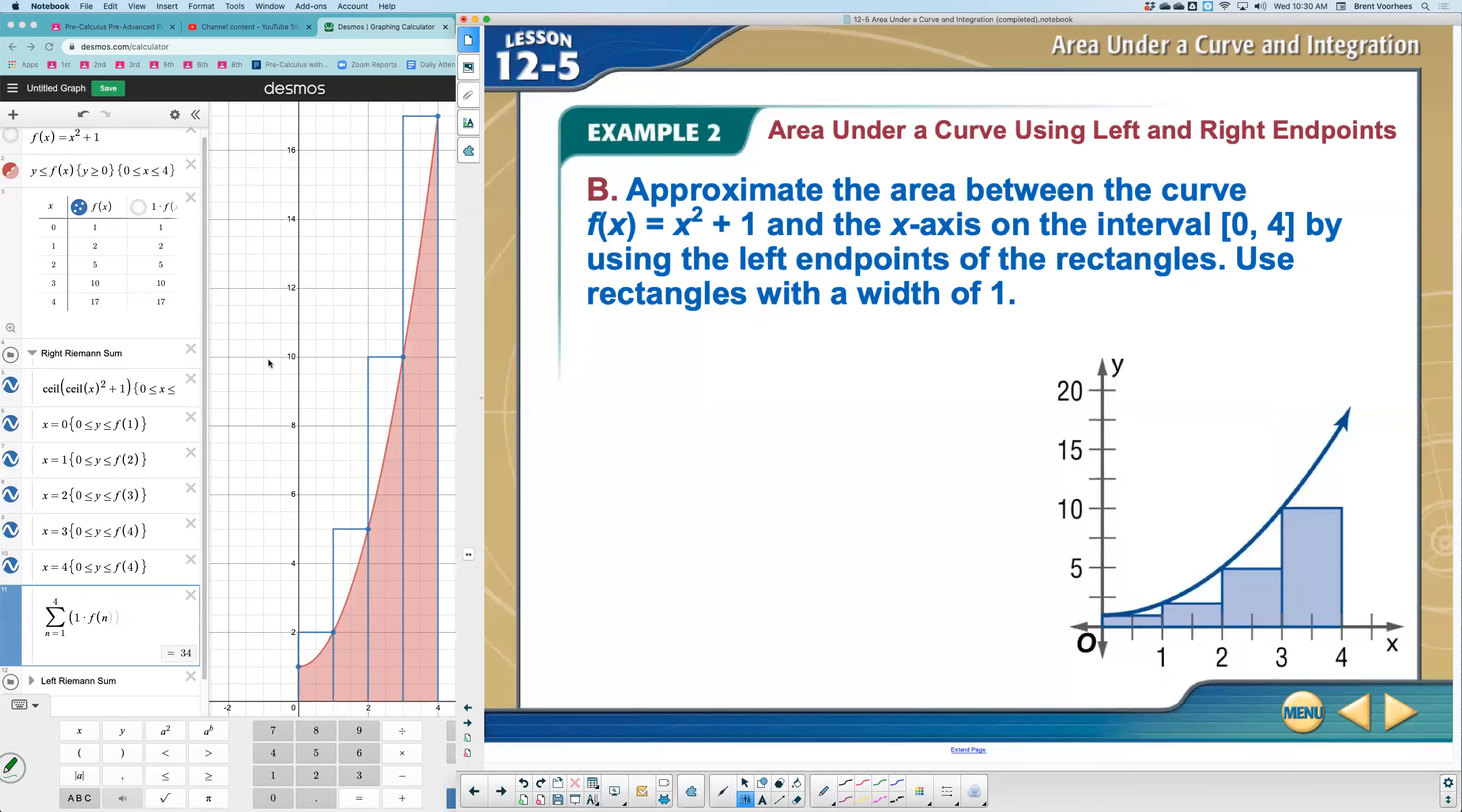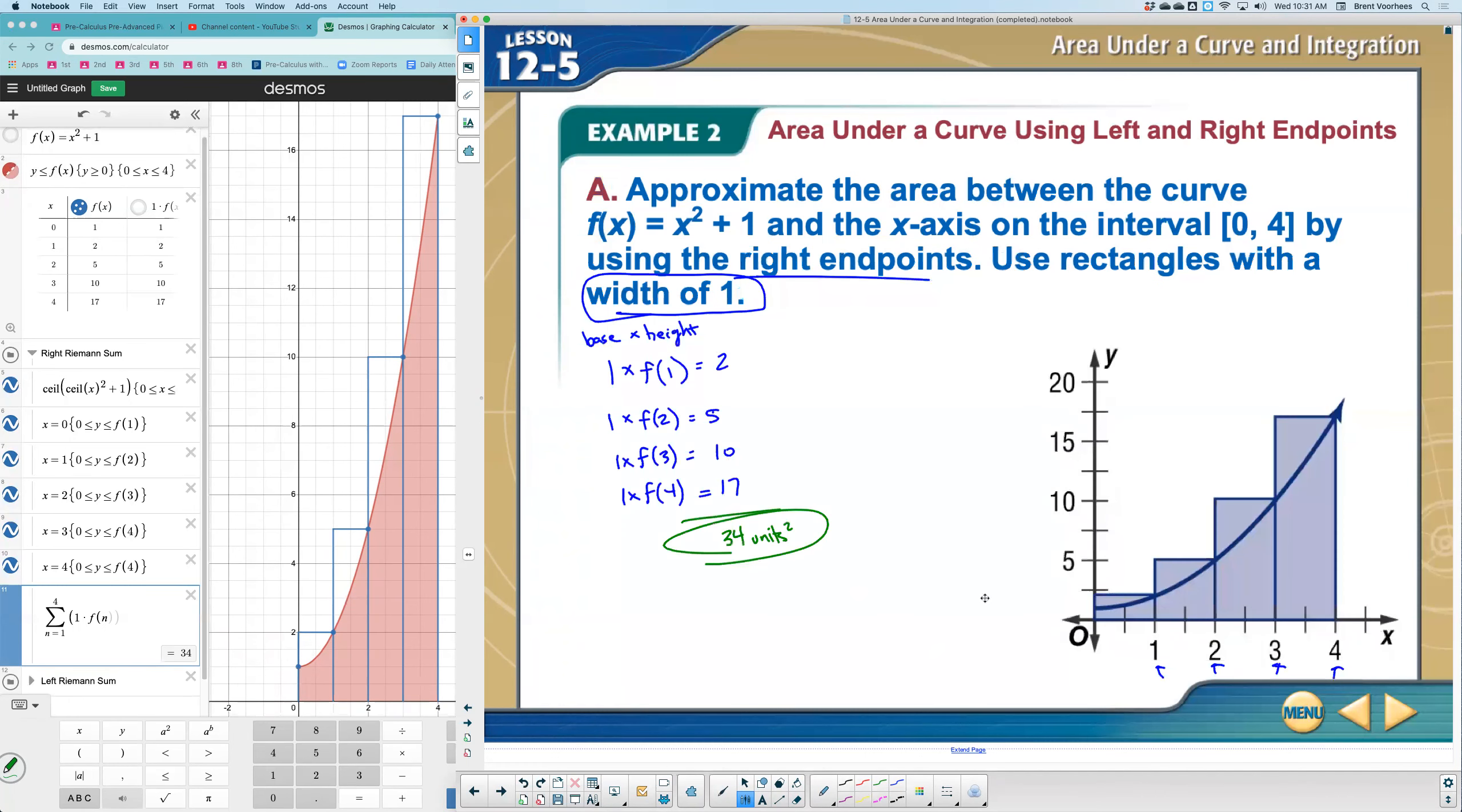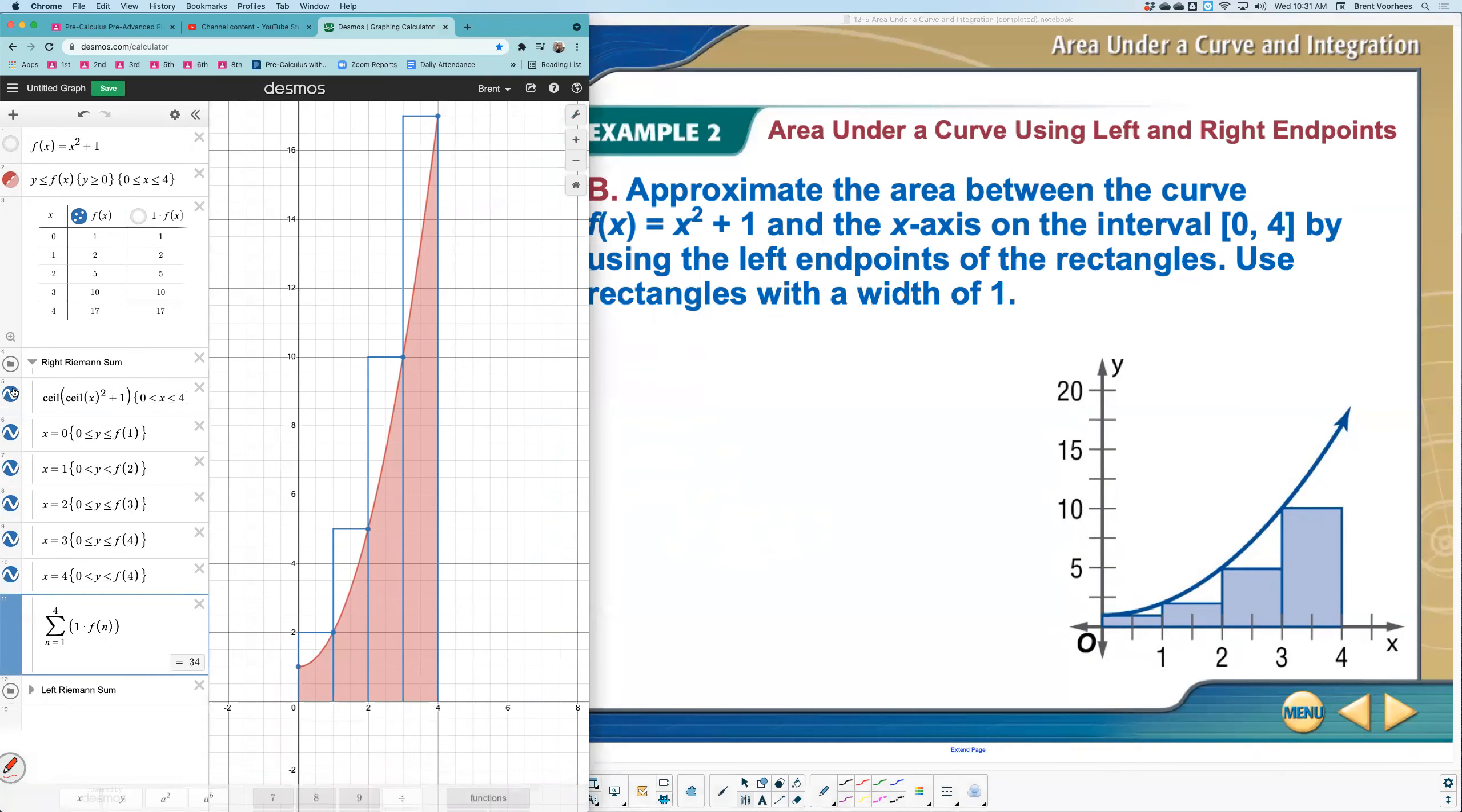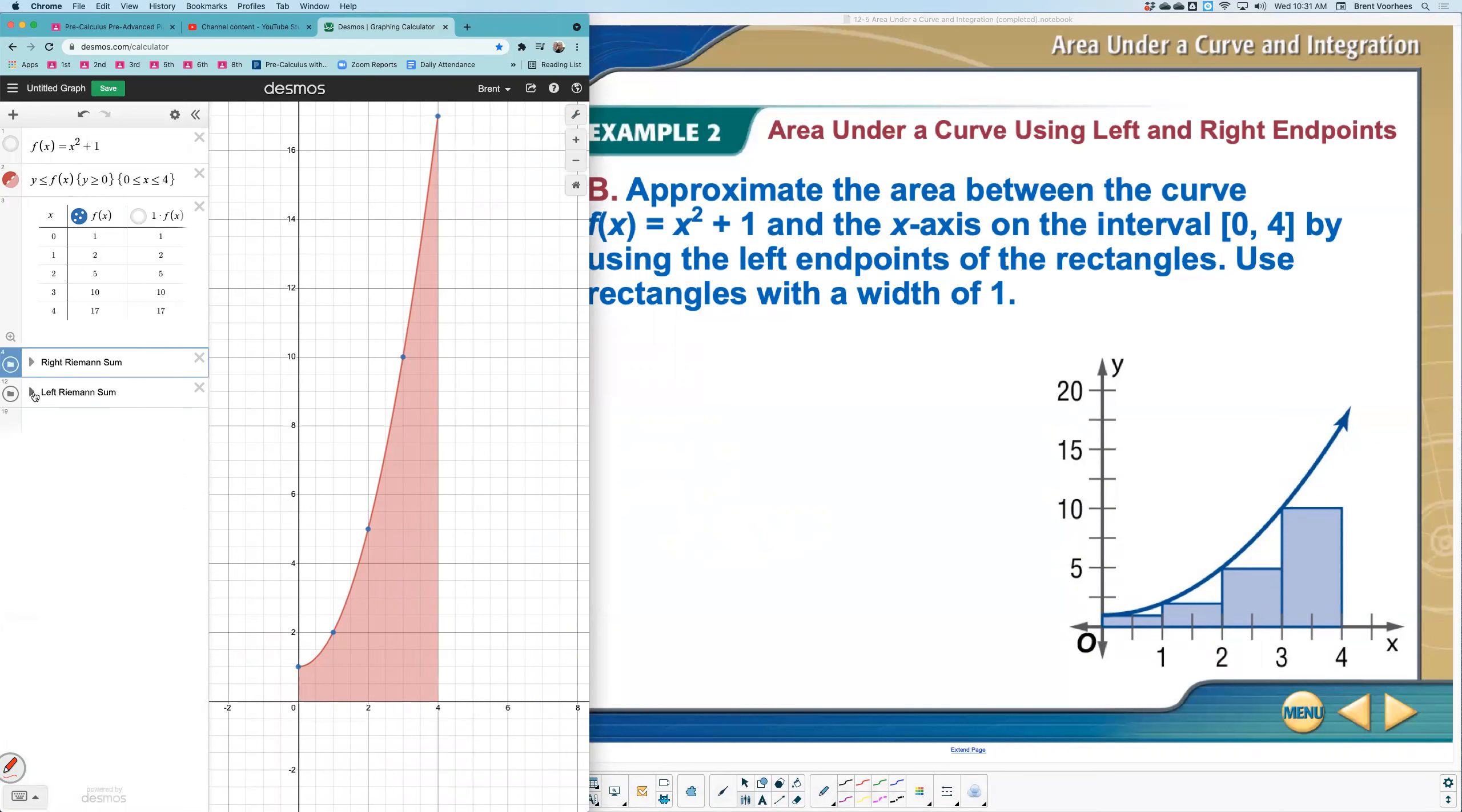Now let's take a look if we were looking at the left endpoints. So this time, instead of saying I want this area, which we got to be two, this area which was five, 10 and 17. If you didn't catch that, that's what these blocks are. That's the area. So like this block has an area of two units squared. This one is five units squared. This one's 10 units squared. And this was 17 units squared. Now let's look at it using left endpoints.